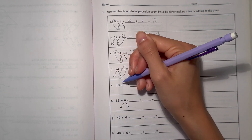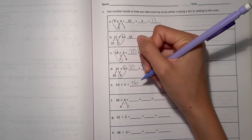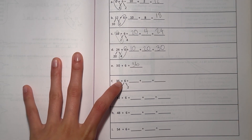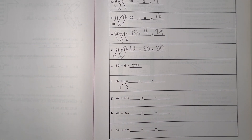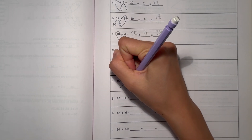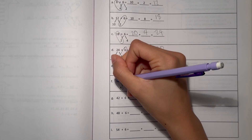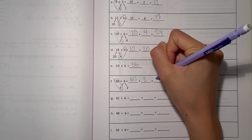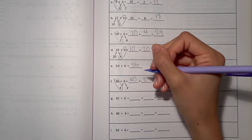Part e: 30 plus 6 is pretty straightforward — that's just 36. Part f: 36 plus 6. We know 36 only needs 4 more to get to the next 10, so I broke 6 into 4 and 2. 36 plus 4 is 40, plus the 2 is 42. So 36 plus 6 is 42.